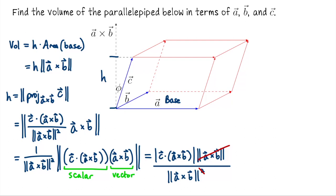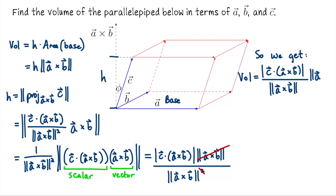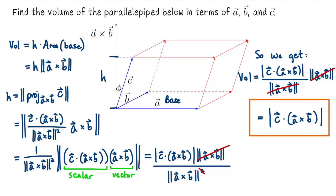Plugging H back into the volume formula — H times the length of A cross B — the length of A cross B cancels, leaving the final formula: volume equals the absolute value of C dot (A cross B). Here A cross B is a vector, C dotted with it is a scalar, and we take the absolute value so the volume is positive. This is the scalar triple product.